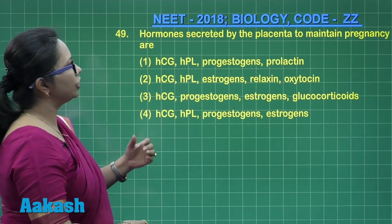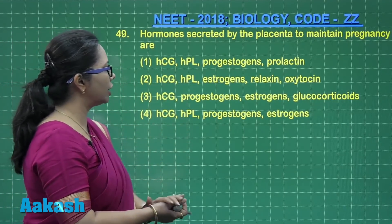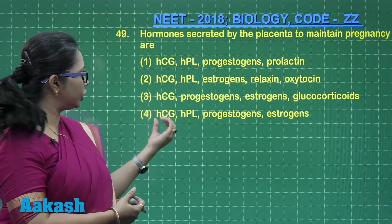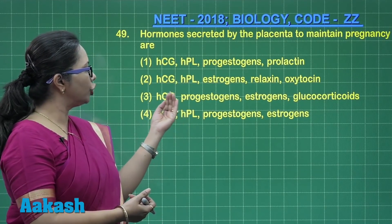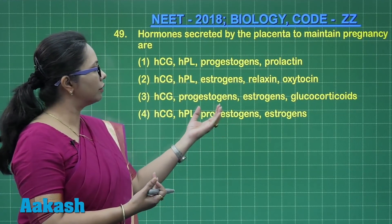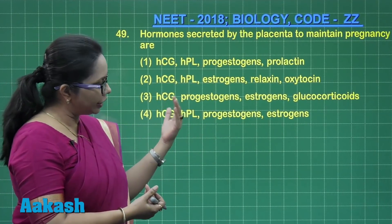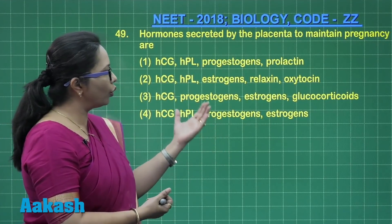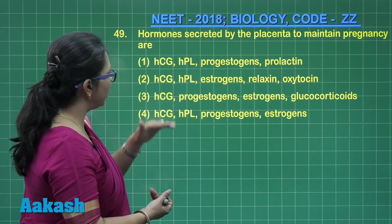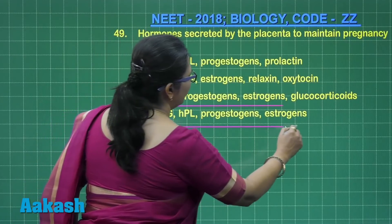Question 49: Hormones secreted by the placenta to maintain pregnancy. From the placenta, the hormones secreted are HCG (human chorionic gonadotropin), HPL (human placental lactogen), progestogens which include progesterone, and estrogens such as estradiol or estrone. These four are given in option four, making it the correct answer.